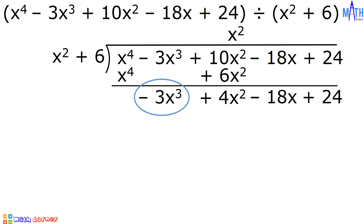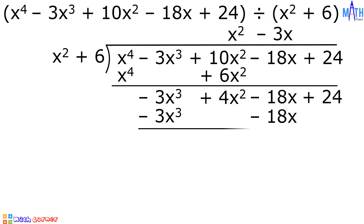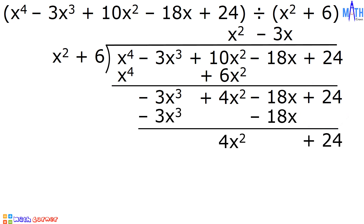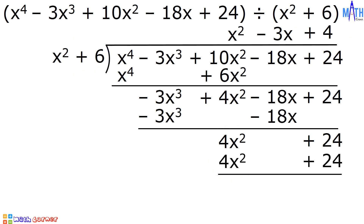Let us divide negative 3x cubed by x squared. The answer is equal to negative 3x. Negative 3x times x squared is equal to negative 3x cubed. Negative 3x times 6 is equal to negative 18x. Let us subtract. Negative 3x cubed minus negative 3x cubed is equal to 0. We will bring down 4x squared. Negative 18x minus negative 18x is equal to 0, and then we will bring down 24. Let us divide 4x squared by x squared. The answer is equal to 4. 4 times x squared is equal to 4x squared. 4 times 6 is equal to 24. Let us subtract. 4x squared minus 4x squared is equal to 0. 24 minus 24 is equal to 0.